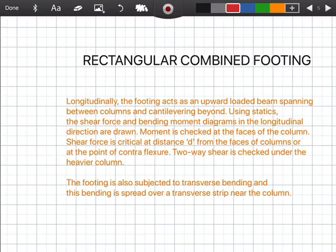Rectangular combined footing - longitudinally, the footing acts as an upward loaded beam spanning between columns and cantilevering beyond. Using statics, the shear force and bending moment diagrams in the longitudinal directions are drawn. Moment is checked at the face of the column. Shear force is critical at a distance d from the faces of the column or at the point of contraflexure. Two-way shear is checked under the heavier column. The footing is also subjected to transverse bending and this bending is spread over a transverse strip near the column.